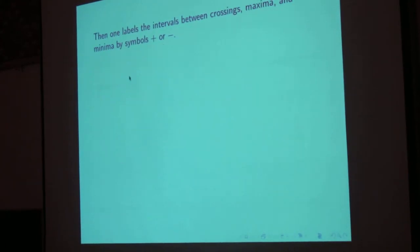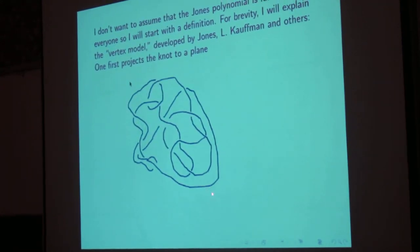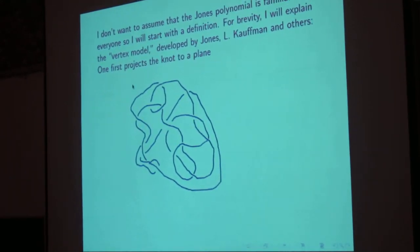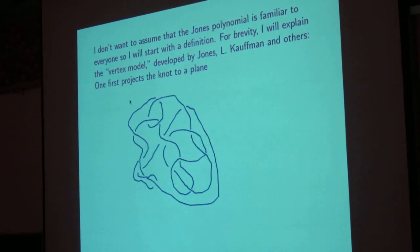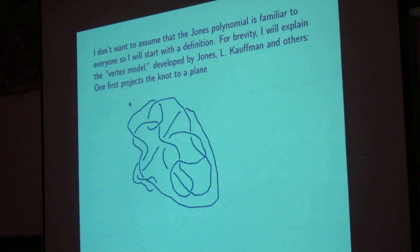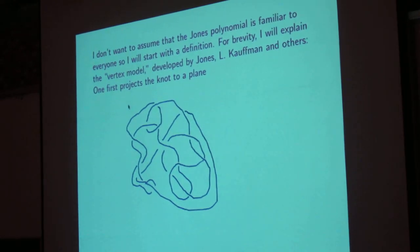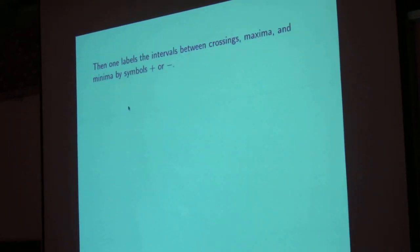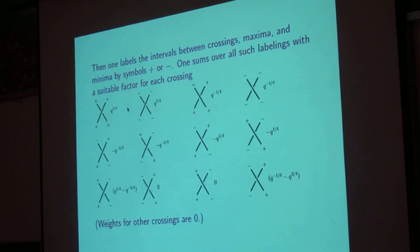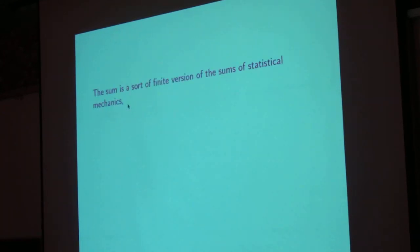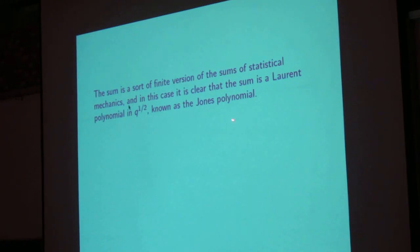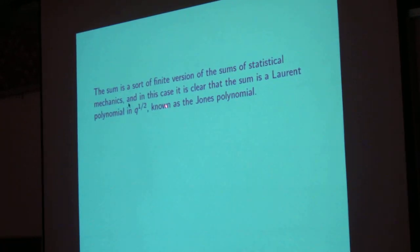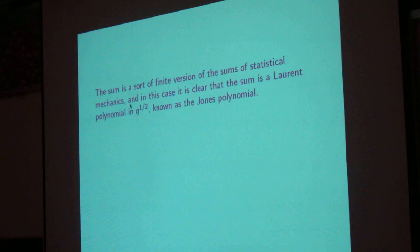So in this knot, if you remove all the maxima, minima, and crossings, you'd have roughly 30 pieces left. And so there would be 2 to the 30 ways to label them. And you'd do a discrete sum of 2 to the 30 terms, each of which would be a product of factors that would look like either this or this. And after you calculate the discrete partition function, you get a Laurent polynomial in q to the half that's known as the Jones polynomial for that knot.